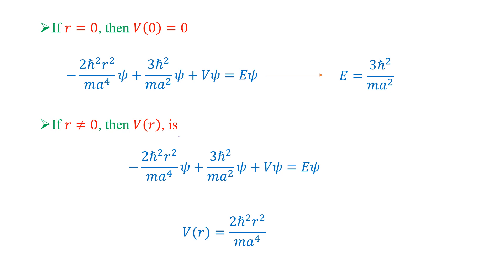According to the given problem, when r equals 0, V equals 0. Setting r = 0, the first term (containing r²) vanishes and V = 0, so: -3h-cross²/(ma²)·psi... with signs resolved, E = 3h-cross²/(ma²). This is our energy eigenvalue E for Part 2.